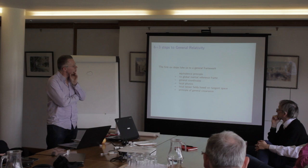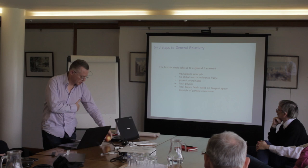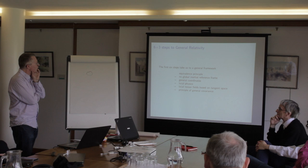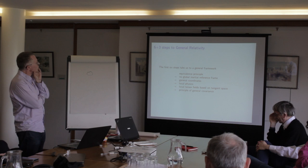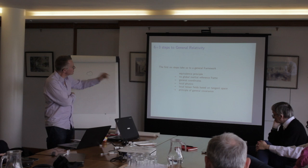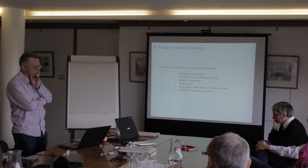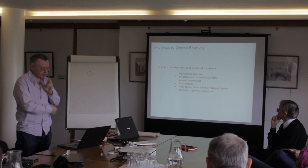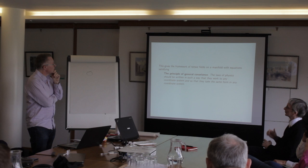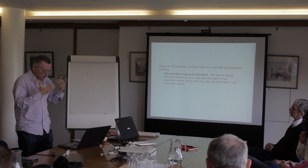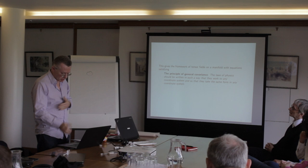First of all, he starts with the equivalence principle: an apple and a bigger apple will fall at the same rate. From that he deduces there is no global inertial reference frame, which motivates the use of general coordinates — you can't use inertial coordinates. Then, at the end, you have the principle of general covariance: the laws of physics should be written so that they work in any coordinate system and take the same form in any coordinate system. This was a very powerful principle for him to arrive at general relativity. It was a very conceptually driven approach.